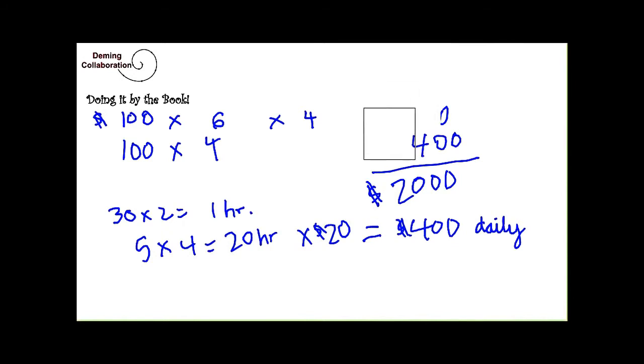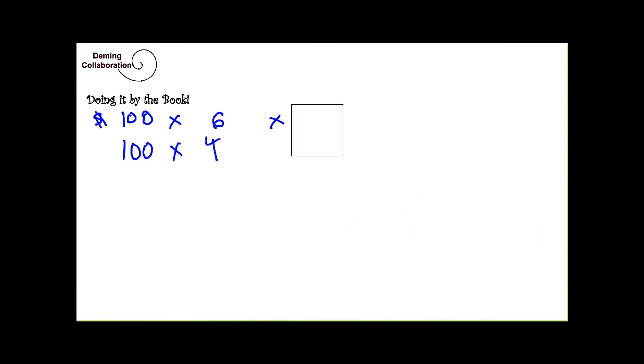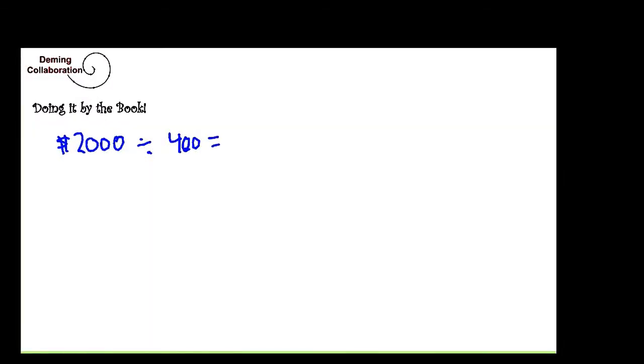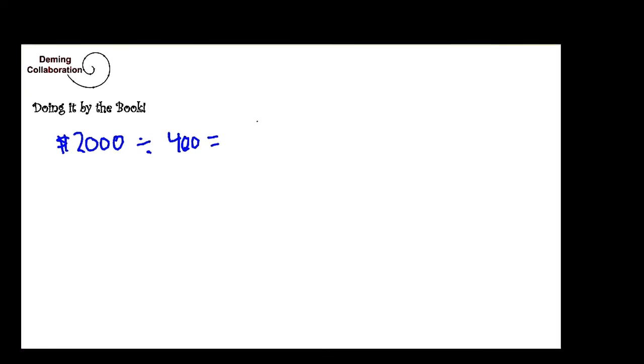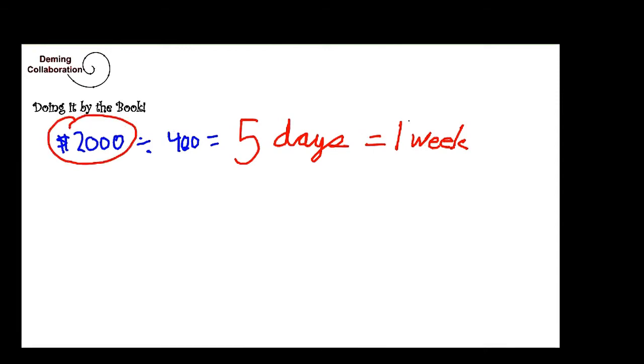That means, if you take $2,000, the savings that was made in the purchase, and you divide that by $400, which is the wasted money spent in labor, you get five days. Which means, that it only takes one week until all that savings of $2,000 is gone.